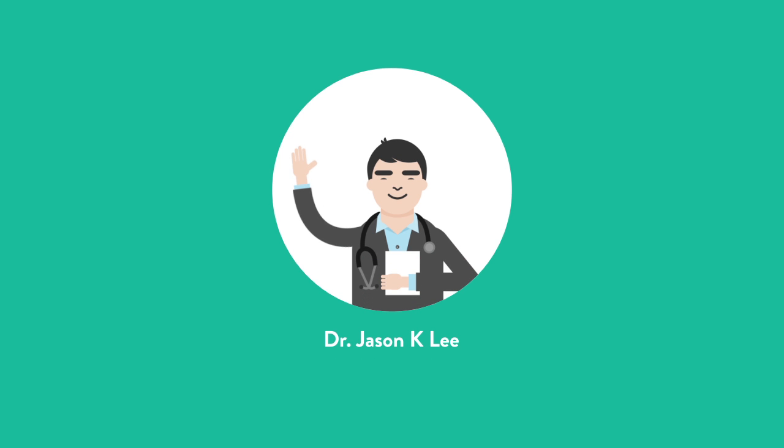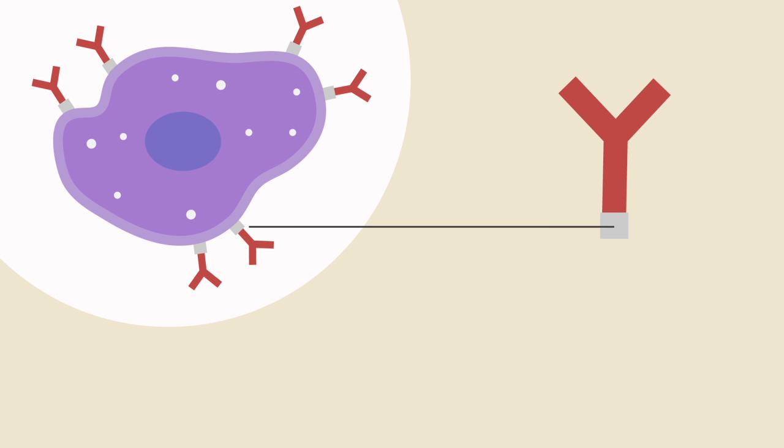Hello everyone and welcome to lecture 3. In lectures 1 and 2 we learned that by definition a type 1 hypersensitivity reaction is an allergy. In lecture 2 we learned that this is mediated by specific antibodies that bind to mast cells through something called the FCεR1 receptor.